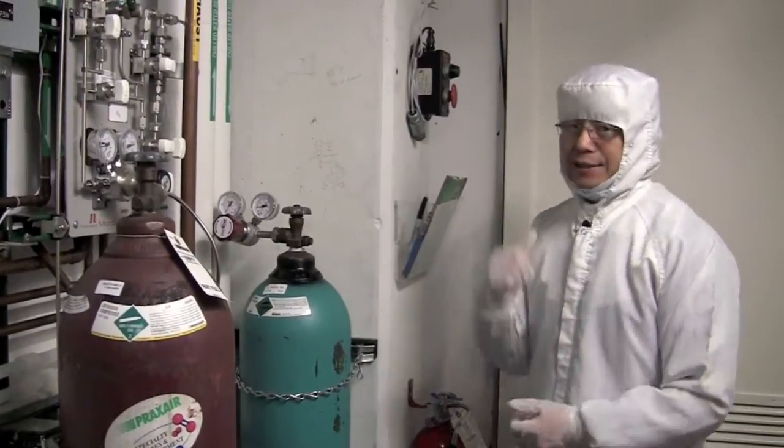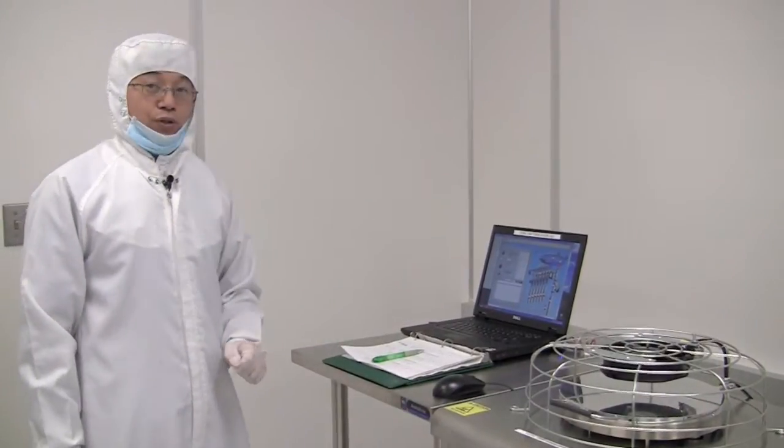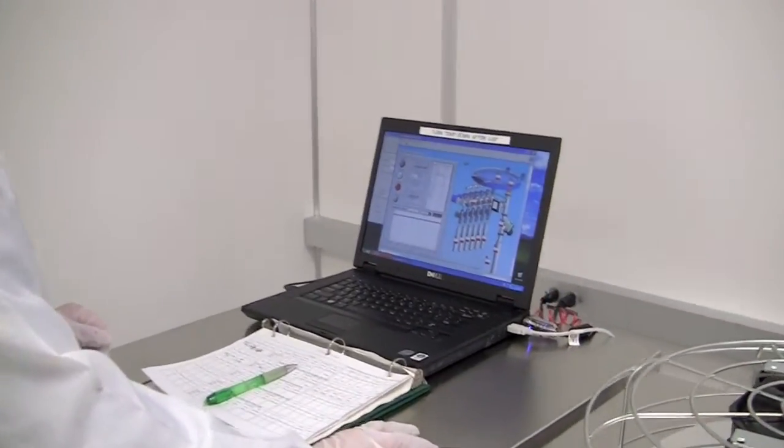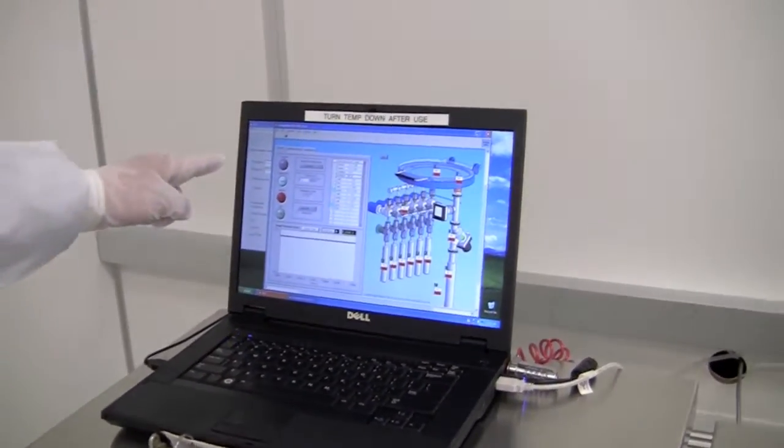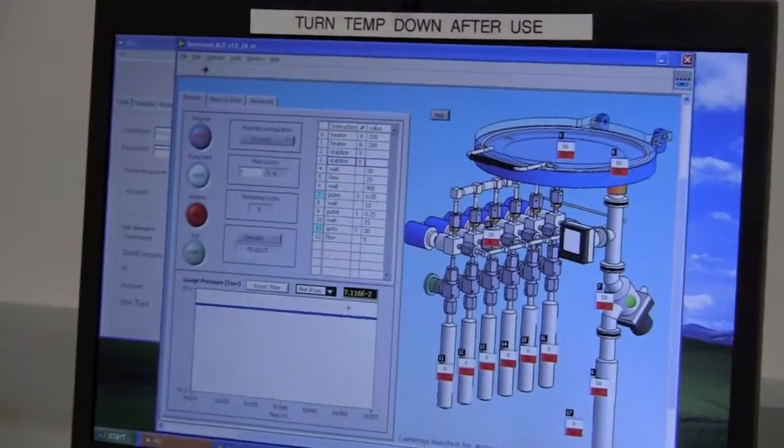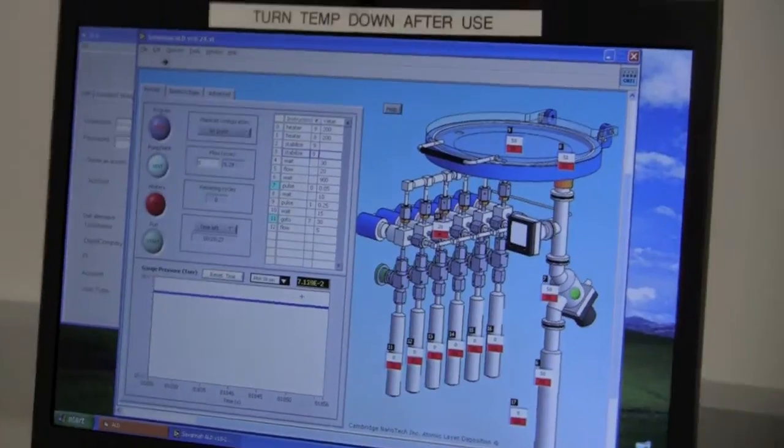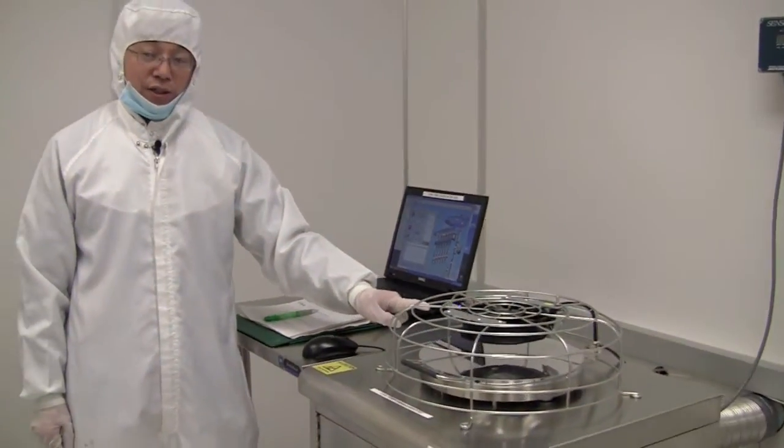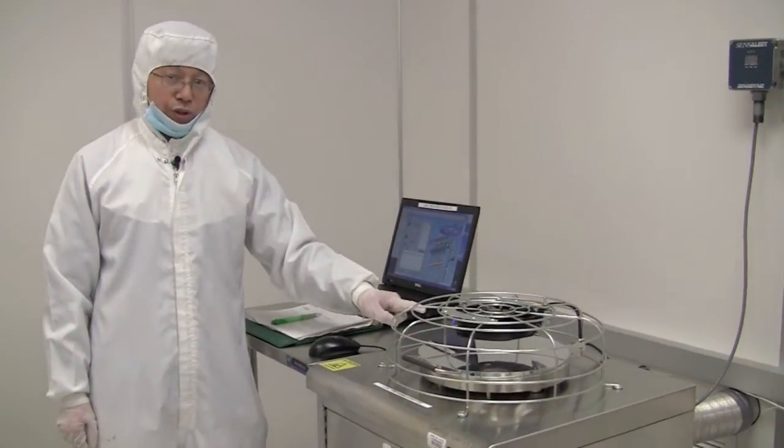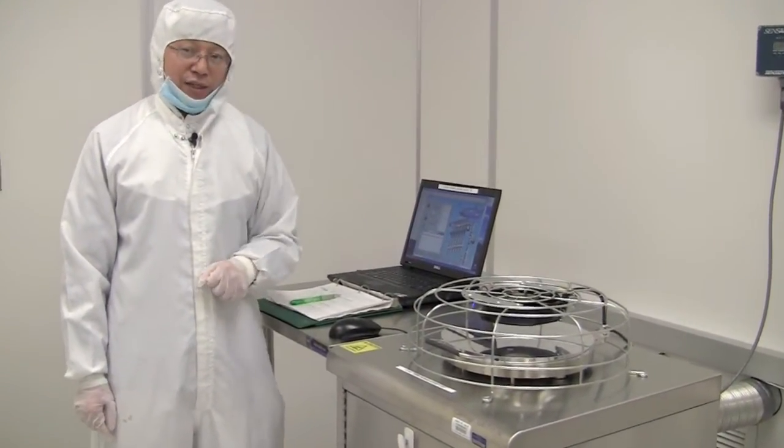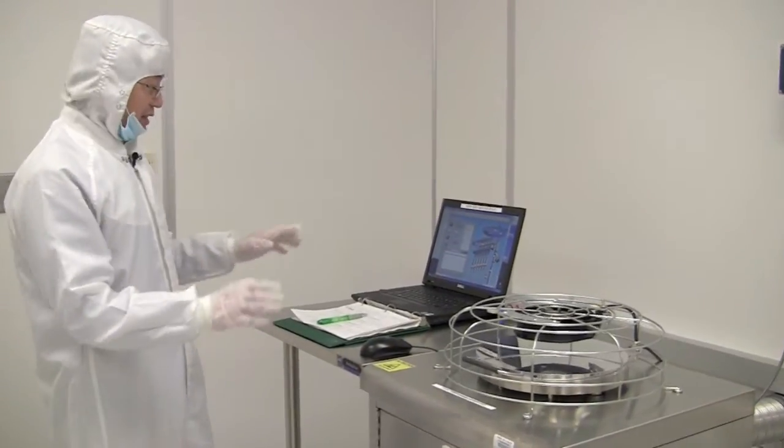Now let's go back. This is the software to run the tool. You'll notice the nitrogen flows at 5 sccm. The chamber pressure is around 70 millitorr. This metal shield is a heat guard to prevent users from directly touching the hot lid by accident. Everything looks fine.